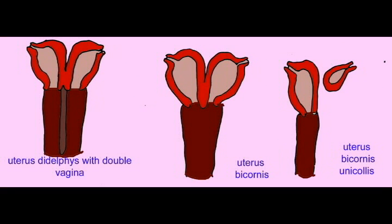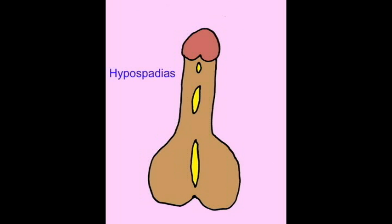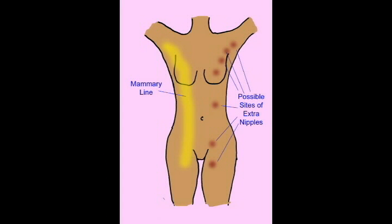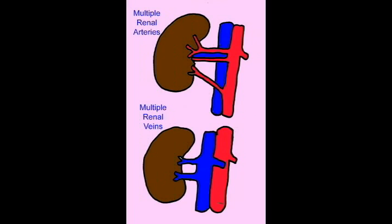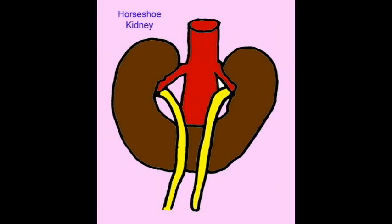The genome guides the development of the human form from a single cell to an adult form. As mutations continue to modify the human genome, variations in the human form will continue to arise. Kidneys can vary in their position, the number of blood vessels and ureters which exit them, and their fusion.